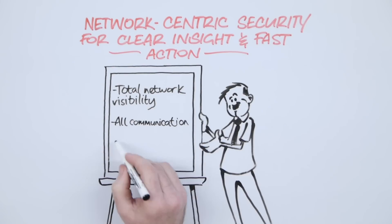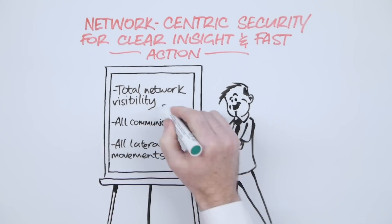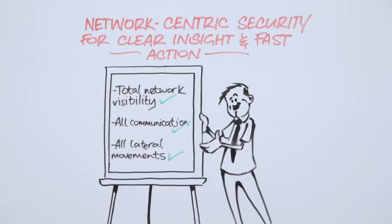Traffic-centric security means focusing on the network because all communications, all lateral movement, and all theft from an organization are visible from the network.